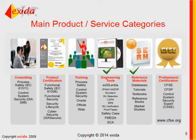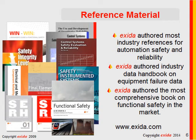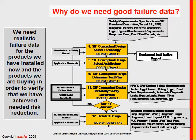Everything Exeter does is oriented toward automation system reliability, availability, safety, and cyber security. I'm proud to say that Exeter has authored most of the industry references for automation, safety, and reliability. We've authored the data handbooks on equipment failure rate data and component failure rate data. We like our work to be made public and we sell them in book form as opposed to keeping them secret.